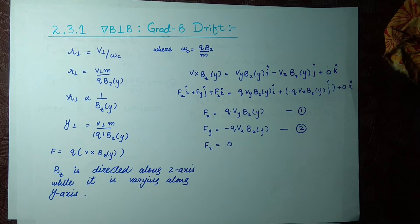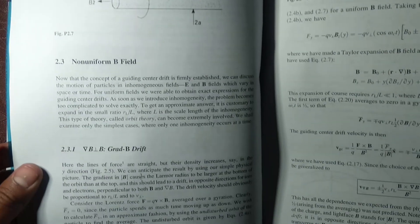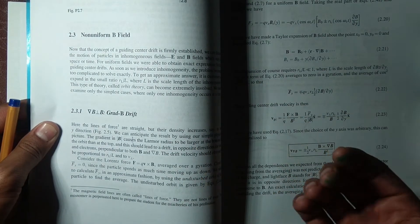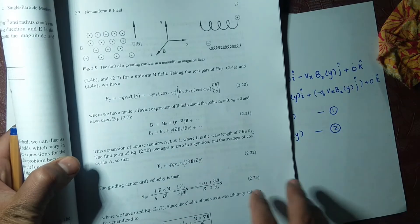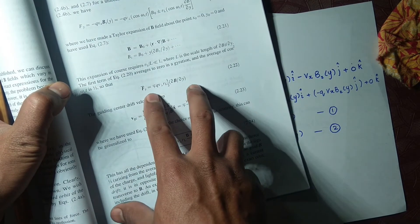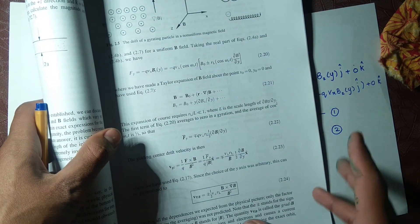We are on section 2.3.1, dealing with del v. Let's look at the book first — this topic is on page 26. I'm showing you this because it's easy for you when you consult the book. This is Francis F. Chen's book, which most universities follow. The ultimate goal of our lecture is to find out the value of this drift velocity — how this value comes, how f(y) comes, and what this value is.